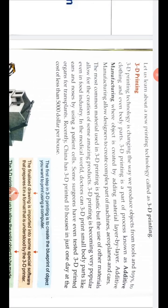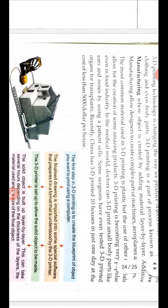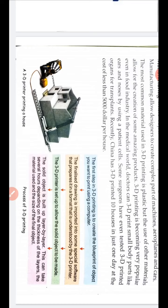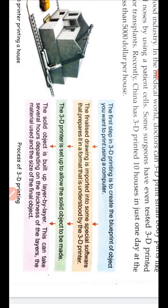Let us learn about a new printing technology called 3D printing. The first step in 3D printing is to create the blueprint of an object you want to print using a computer. Step 2: the finalized drawing is imported into special software that prepares it in a format understood by the 3D printer. Step 3: the 3D printer is set up to allow the solid object to be made. Step 4: the solid object is built layer by layer, which can take several hours depending on the thickness of the layers, the material used, and the size of the final object.